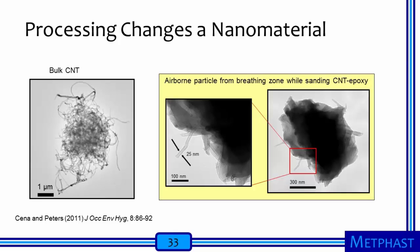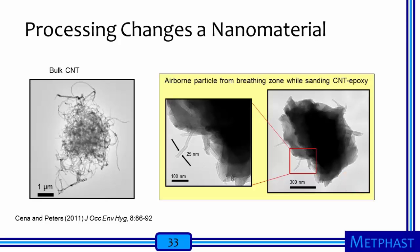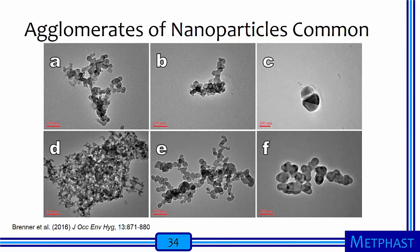Through electron microscopy, you can determine important information regarding the nature of exposures. For example, I depict the changes that occur to airborne particles released during different processing steps involving carbon nanotubes. At left, I show a carbon nanotube as delivered from a vendor, which may become airborne during handling or weighing. In contrast, a very different particle type is released when sanding a part composed of epoxy with CNTs added for strength — here the carbon nanotubes protrude from a larger epoxy core. From electron microscopy, one can also learn about the agglomerate state of nanomaterials.